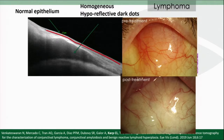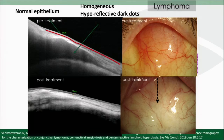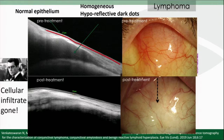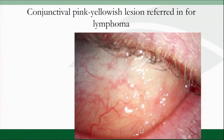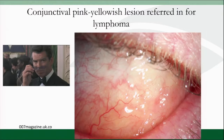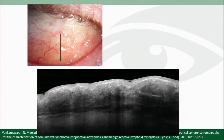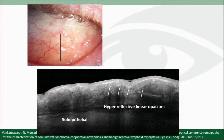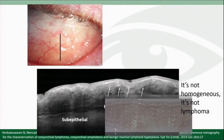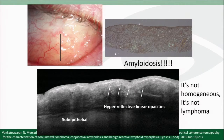I treated that patient with external beam radiation, and now the salmon patch is gone. By OCT, I can see that all those dark dots are gone below the epithelium. But here's another patient referred in for lymphoma — it's kind of pink and yellowish. On OCT I see a subepithelial lesion with hyperreflective lines and a not-homogeneous, schmutzy appearance — not homogeneous dark dots. This turned out to be amyloidosis.